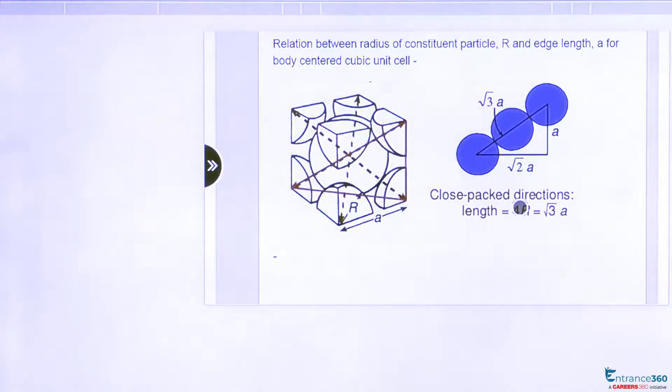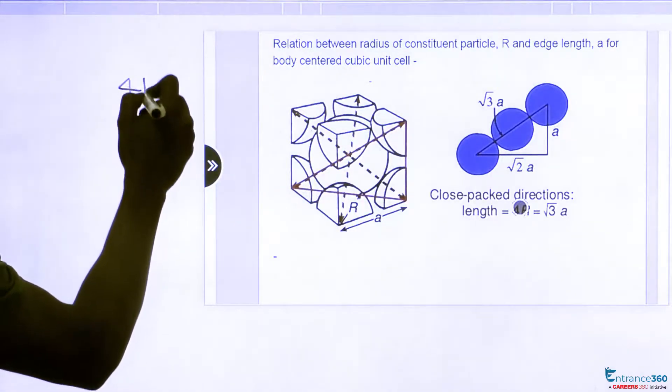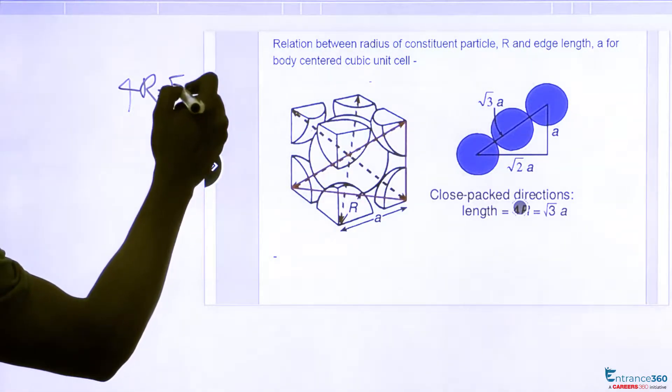In order to solve this question, we have to first know about the relation between radius of particle and edge length in case of BCC. As we can see here, this is a BCC structure and the relation between the edge length and the radius is given as 4r equals root 3a.